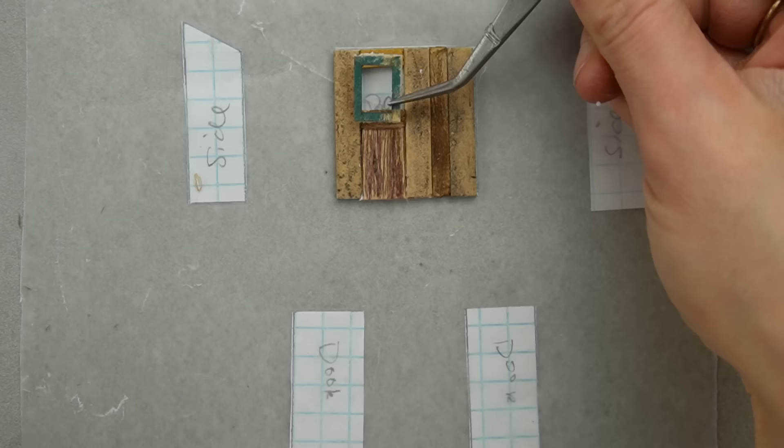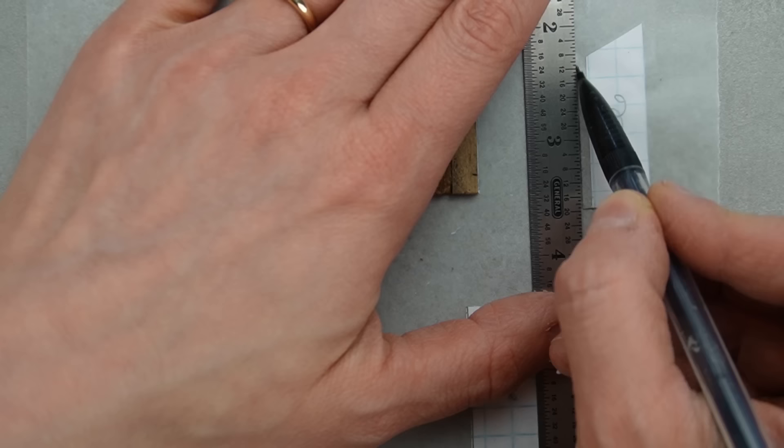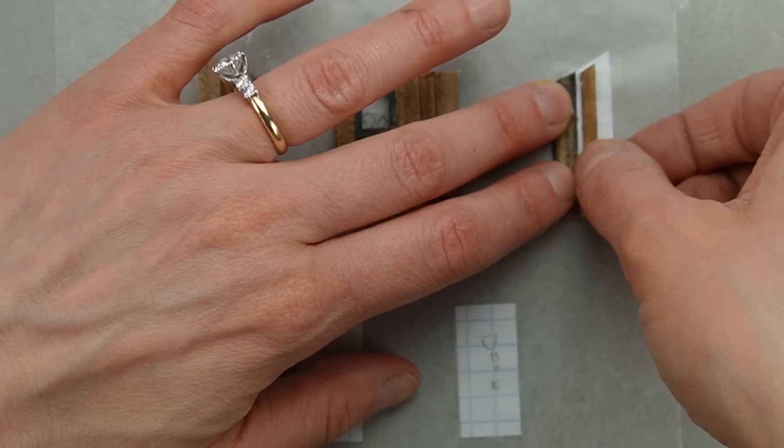I'm making the side pieces wider so the walls won't be too shallow once I attach the thick wooden back piece. I assembled the rest of the pieces the same way by gluing strips of wood next to one another and following my pattern.